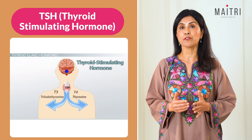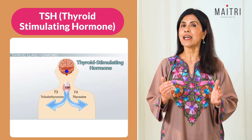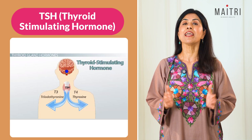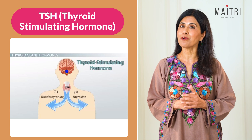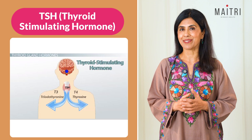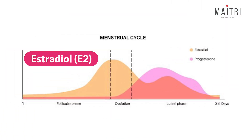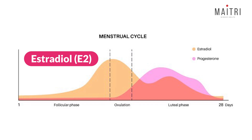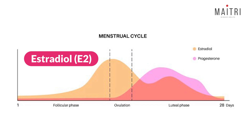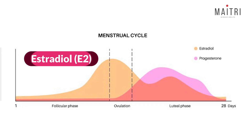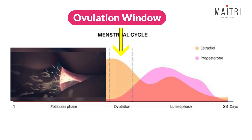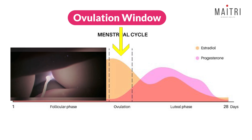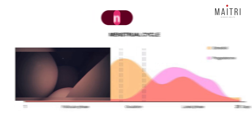TSH, thyroid stimulating hormone: thyroid health is critical for fertility. High or low TSH can affect ovulation and pregnancy outcomes. Estradiol, E2: a form of estrogen monitored during ovarian stimulation to track follicle growth. Ovulation window: the few days in your cycle when you are most fertile — that's the key for natural conception.